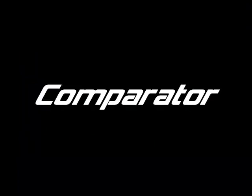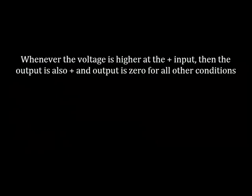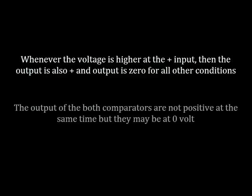Comparator. The IC has two comparators — comparator A and comparator B. Whenever the voltage is higher at the positive input, the output is also positive, and output is zero for all other conditions. The outputs of both comparators are not positive at the same time, but they may both be at zero volts.